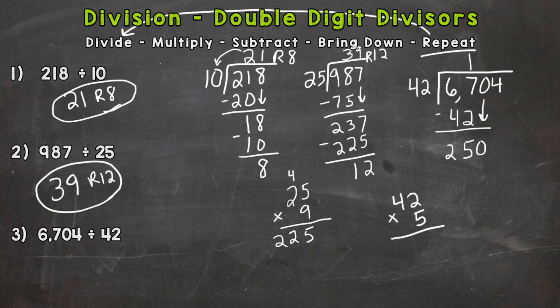So 42 times 5 is going to give us 5 times 2 is 10, and then we have 5 times 4, which is 20, plus that 1 is 21. So that gives us 210. Okay, that's not bad, that's pretty close. But let's check if we can get closer. I'm going to try 42 times 6 just to make sure—you have to get as close as you possibly can.